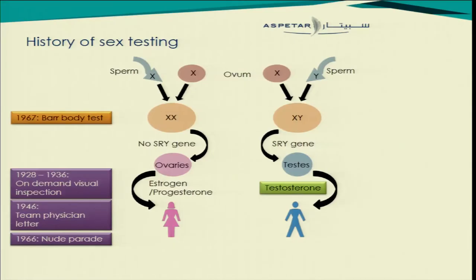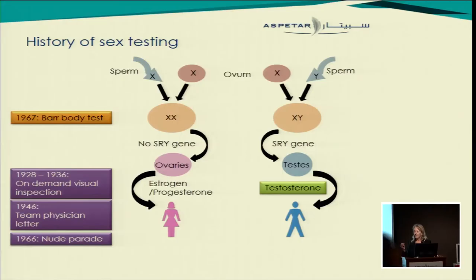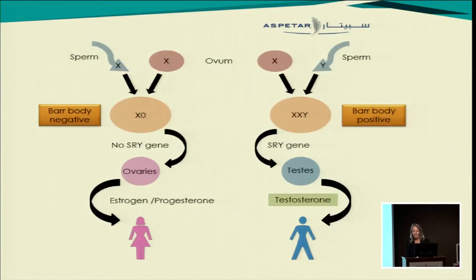Then in 1967 the Barr body test was put in place. Instead of looking at the somatic sex, the focus shifted to chromosomal sex. Already when the Barr body was being introduced in sport, it was getting questioned in the medical community. The Barr body is present when you have an inactivated X chromosome — when you have XX you'll have one Barr body, and when you have XY you'll have no Barr bodies. But the problem is that when you have somebody who's intersex with XO, they will have a negative Barr body test suggesting male chromosomal sex, but they don't have a Y chromosome. And equally, if you have XXY, that will give you a positive Barr body test suggesting female genotype, but in fact you don't.